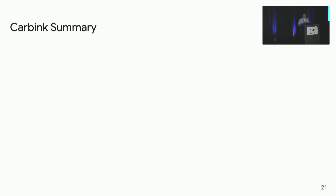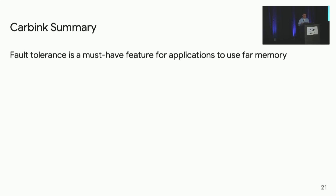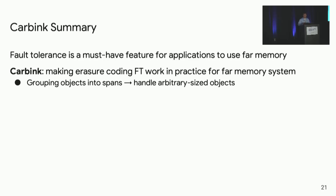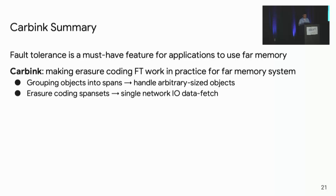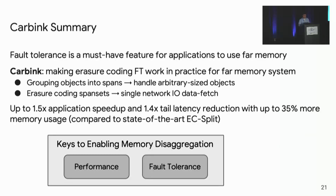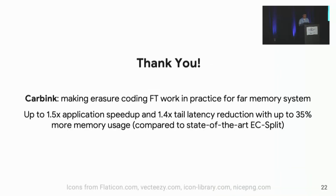To summarize, in this talk we argue that fault tolerance is a must-have feature for applications to use far memory. Our system, Carving, makes erasure coding-based fault tolerance work in practice for far memory systems by grouping objects into spans to handle arbitrary-sized objects, and erasure coding span sets to achieve single network I/O data fetch. As a result, it achieves up to 1.5x application speedup and 1.4x tail latency reduction at the price of slightly higher memory usage. At a high level, we think performance and fault tolerance are the two keys to enabling memory disaggregation, and Carving is a step forward toward the fault tolerance direction. I'm happy to take any questions.